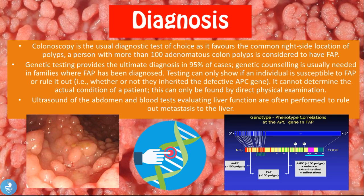Testing can only show if an individual is susceptible to FAP or rule it out — meaning whether or not they inherited the defective APC gene. It cannot determine the actual condition of the patient, and this can only be found by direct physical examination.